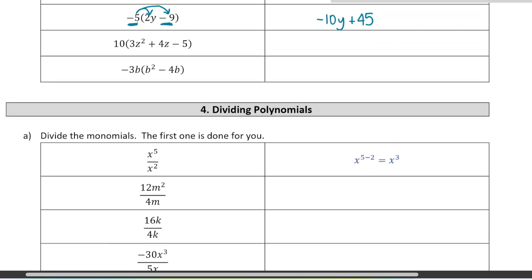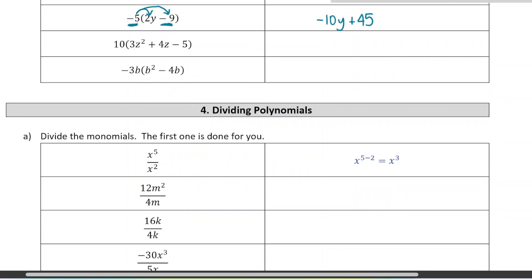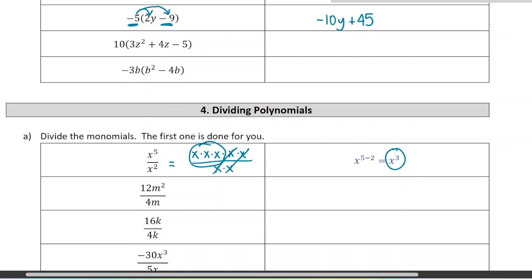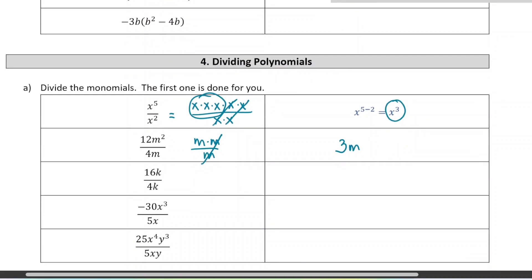Dividing polynomials is similar to multiplying, except you reduce the terms. For example, x to the power of 5 divided by x to the power of 2 — written out, that's 5 x's on top and 2 on the bottom; 2 cancel, leaving x-cubed. You can also subtract exponents when dividing with the same base. Next: 12 divided by 4 is 3, and m-squared divided by m gives m. Then 16 divided by 4 is 4, and the k's cancel completely, leaving just 4.